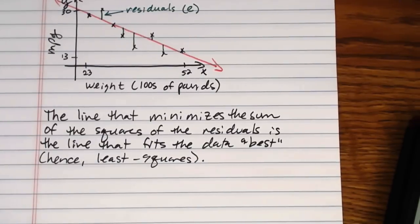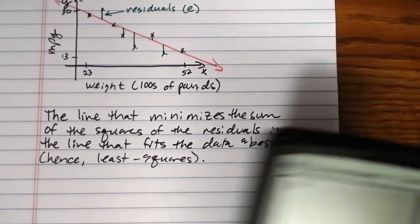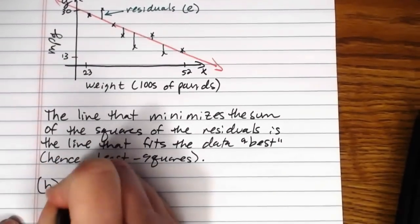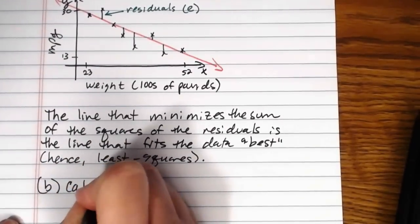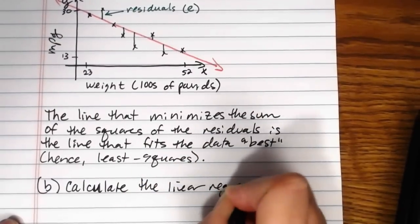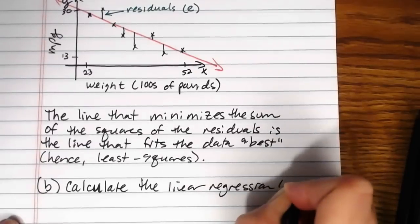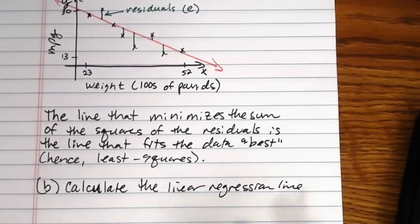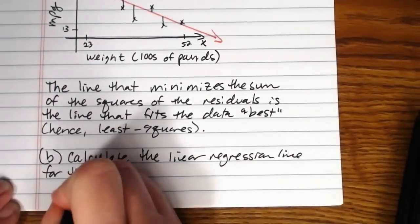Now certainly there is a lot of computation involved in finding this line. If you're interested in doing that, take a look at your book if you want to see how it's done by hand and how that formula is derived. But your calculator also has a program in it that will find this line for you. Okay so that's what we're going to do here. So part b, calculate the linear regression line or line of best fit or least squares line, all of those are referring to the same thing, for this data.